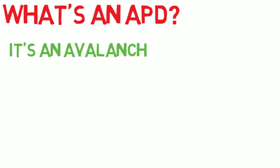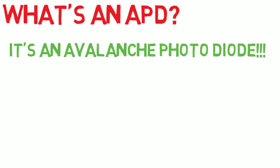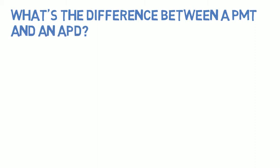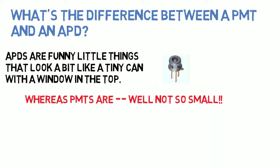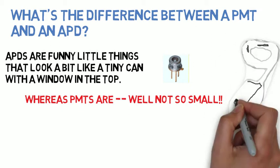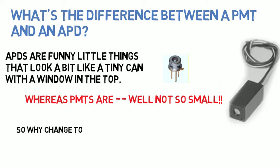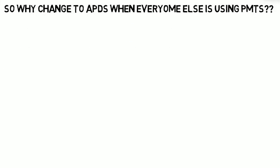So what's an APD anyway? It's an avalanche photodiode. What's the difference between a PMT and an APD? APDs are funny little things that look a bit like tin cans with a window on the top, whereas PMTs are not so small. So why change to APDs when everyone else is using PMTs?